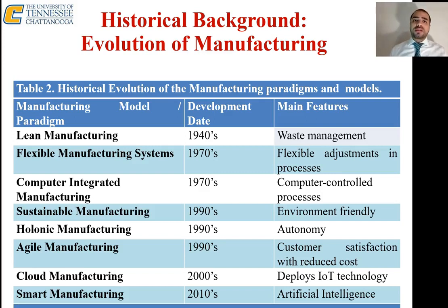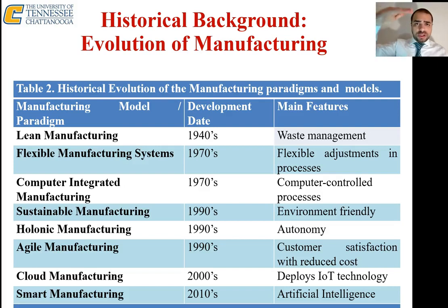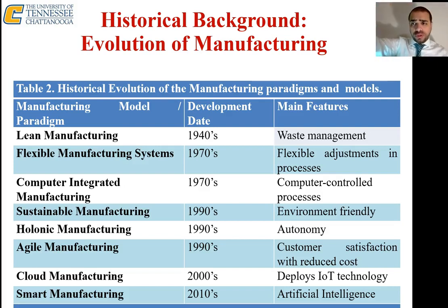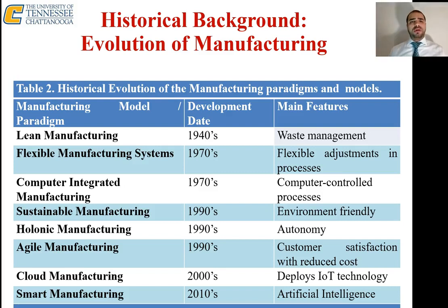Some aspects of lean manufacturing include things that are really simple but at the same time very effective, and can be implemented everywhere in the plant — from the operator level all the way to the CEO level. For example, 5S, the 7 wastes, and so on. Simple things that can be implemented everywhere and can be very effective.